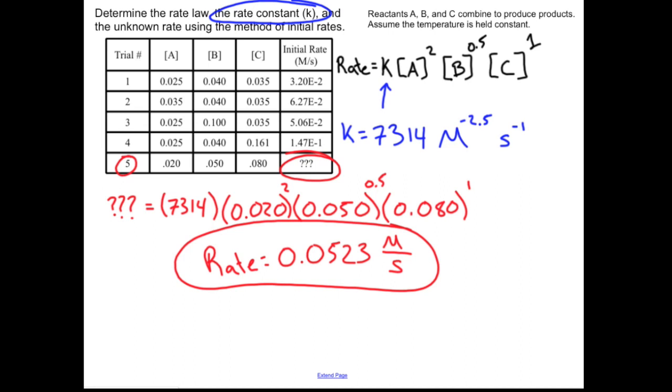So we did quite a few things here with this method of initial rates. That's what we use to solve this problem. We have discovered the rate law, which is written up here, and I have my rate constant, which is right there, and there's my unknown rate. Hopefully some of that made sense, and if you think it did, you should certainly let your computer know.